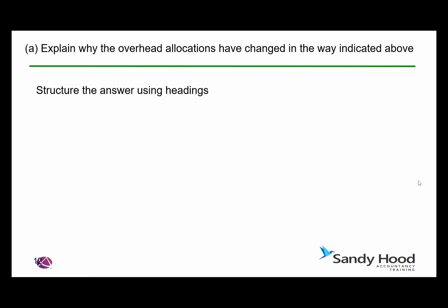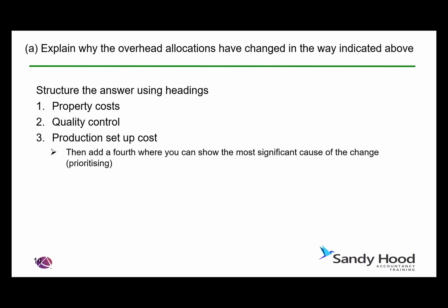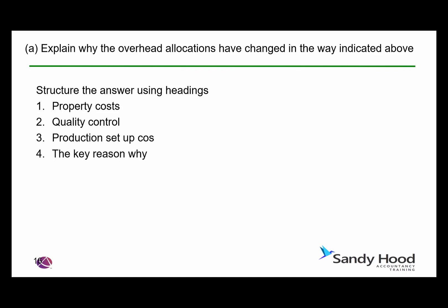So we need to structure our answer using headings. Ideal headings based on the information we've been given would be: property costs, quality costs, and production setup costs. That helps us to structure the answer. And then we need a fourth section to show relative value — to prioritise where the causes have come from and identify which is the most important. This is the key to explaining why the overhead allocations differ between the absorption approach and the ABC approach.